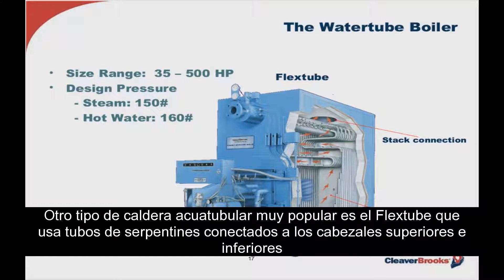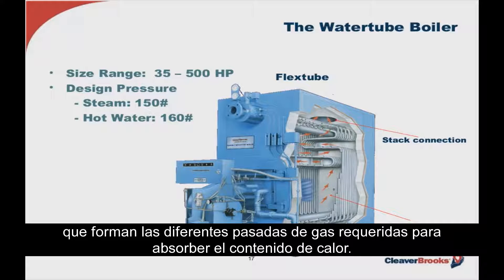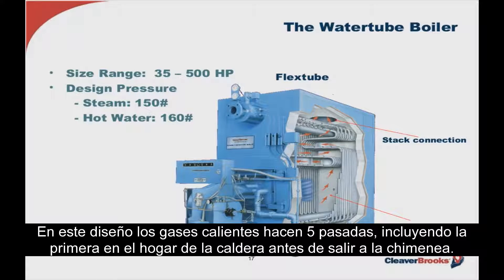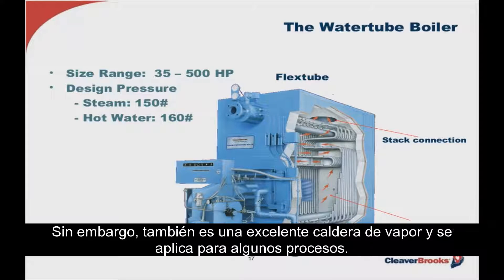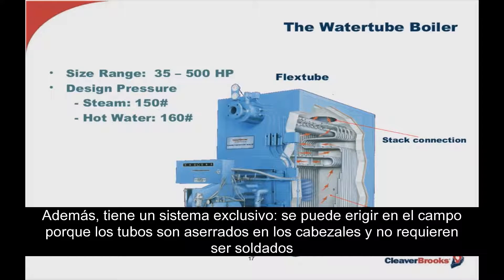The next popular commercial water tube border is the flex tube border, which uses serpentine tubes connected to upper and lower headers, forming the various gas passes required to absorb the heat contents — the hot gases making five distinct passes including the first pass in the furnace before exiting to the stack. Originally designed primarily for hot water comfort heating as it was resilient to thermal shock, it was also found to be an excellent steam boiler applied in some process applications. It has the ability to be readily field-erected because the tubes are swedged into the respective headers, not requiring any welding.